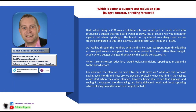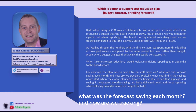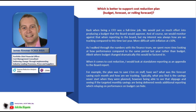We also asked another expert, James Rimmer, which is better to support a cost reduction plan — budget, forecast, or rolling forecast? He stated: 'When it comes to cost reduction, I would look at stand-alone reporting as an appendix to the board report. For example, the plan was to save 1 million pounds on staff — have we? What was the forecast saving each month and how are we tracking?' Typically, what you find is the savings never start when they were planned. However, being able to see that slippage and whether the targeted monthly savings are being delivered needs additional reporting, which relying on performance on budget can hide.